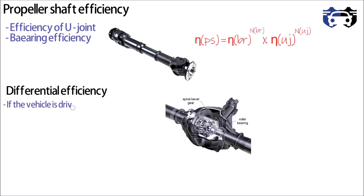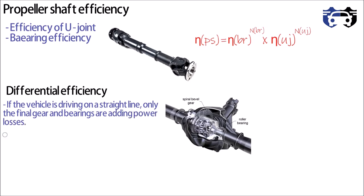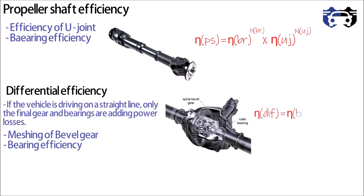Now let's look at differential efficiency. If the vehicle is driving in a straight line, only the final gears and bearings are adding power losses. The differential efficiency mainly depends upon the meshing of bevel gears and bearing efficiency. It is given by: efficiency of bearing to the power of the number of bearings, multiplied by efficiency of gear meshing to the power of one — because only one gear meshing contributes to losses when driving straight.